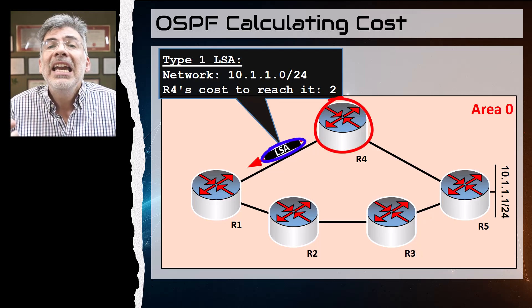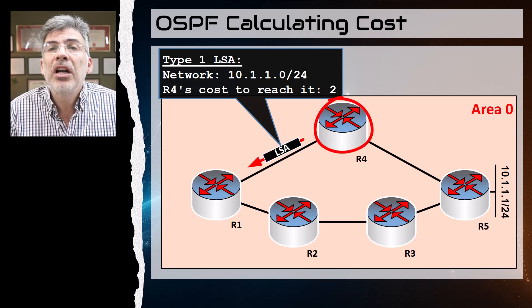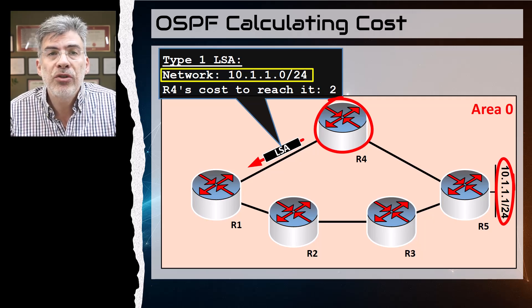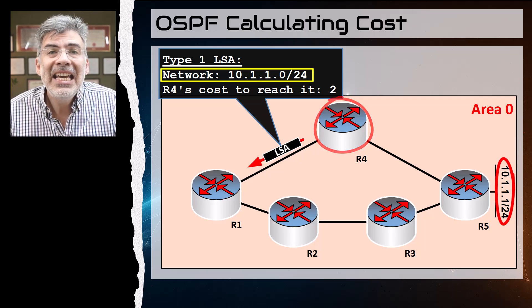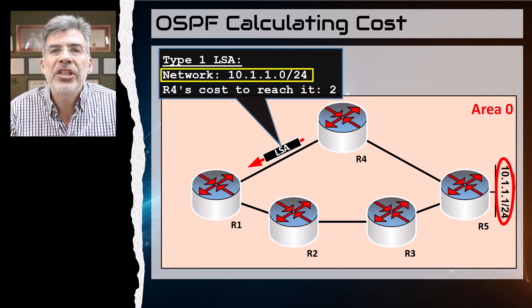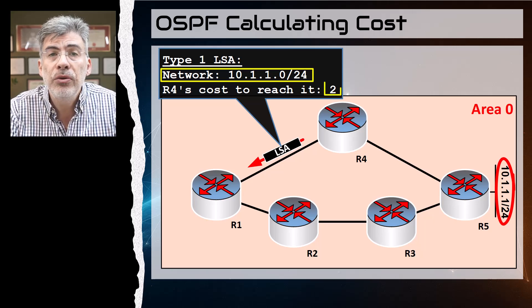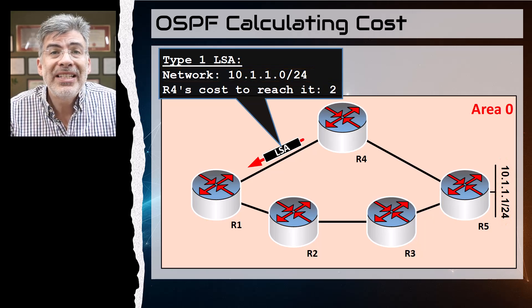Now when R4 sends out its type 1 LSA, it includes the destination network of 10.1.1.0/24 that it learned about, and in that LSA it attaches its own cost to reach that destination, which is a cost of two.